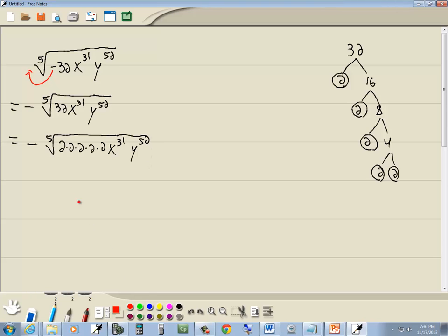Well, our index is 5, so we're looking for a set of 5 of something. Here is five 2s. Those five 2s are going to come out in front as a single 2.